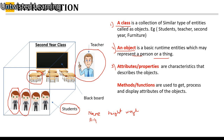Similarly, if you take the example of a teacher, you will have name, mobile number, salary, etc. For the furniture class, color, height, and weight can be examples of attributes of class furniture.